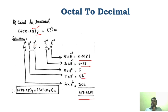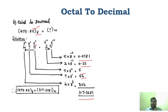Now you understand: for converting any number to a decimal, what you have to do is use this multiplication method only. Understand that particular logic. For any number system to decimal, this is the only step you have to do.